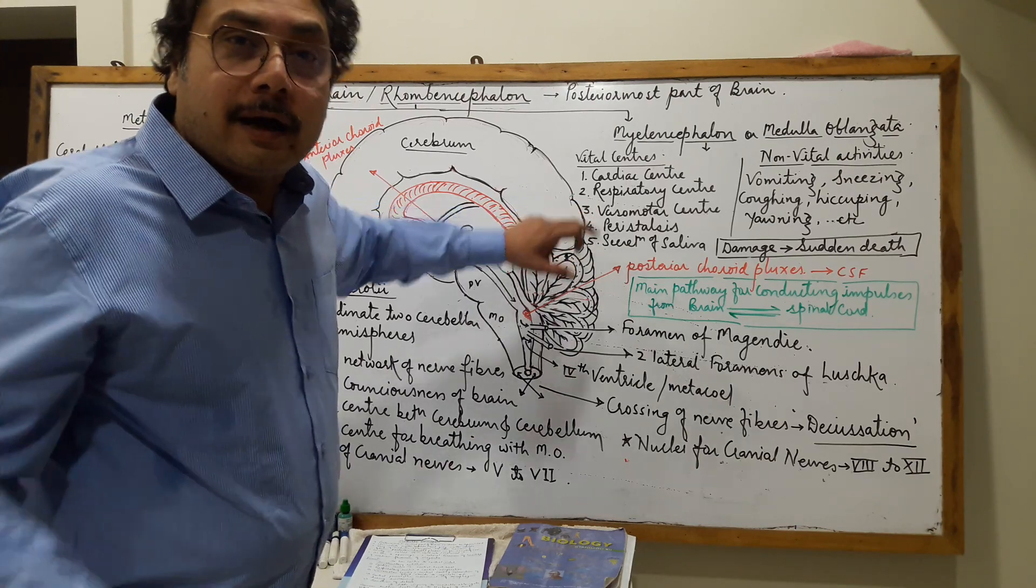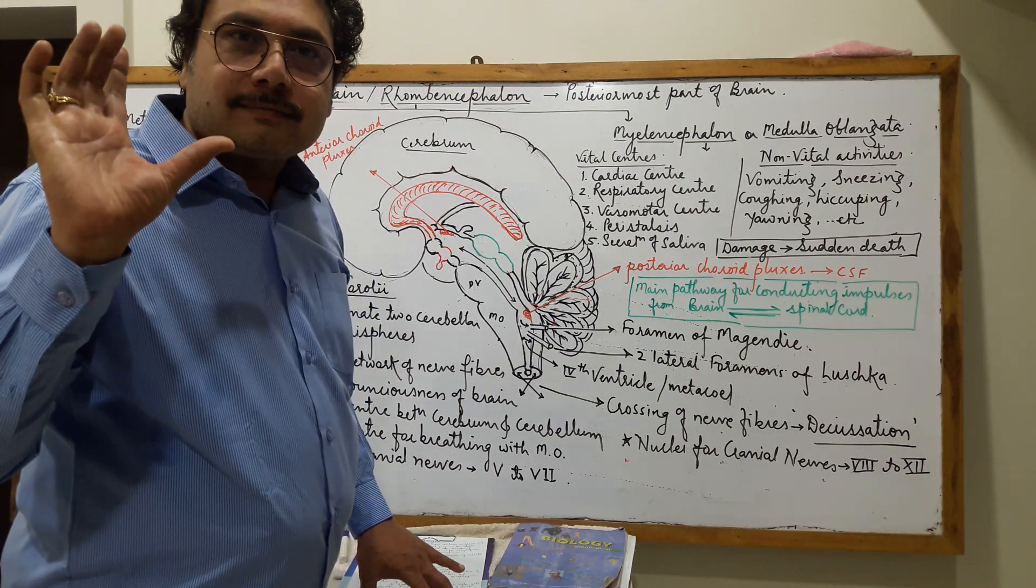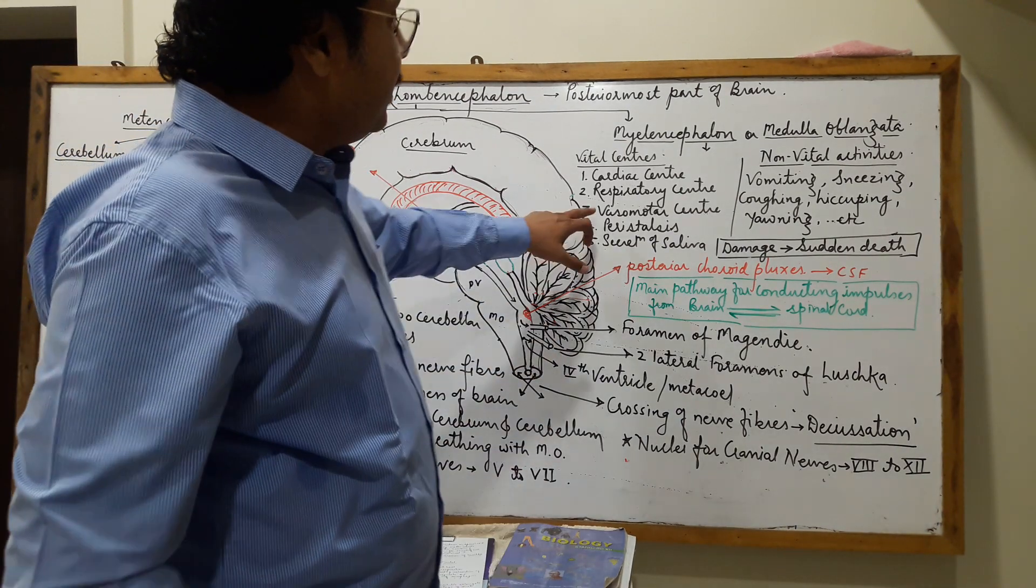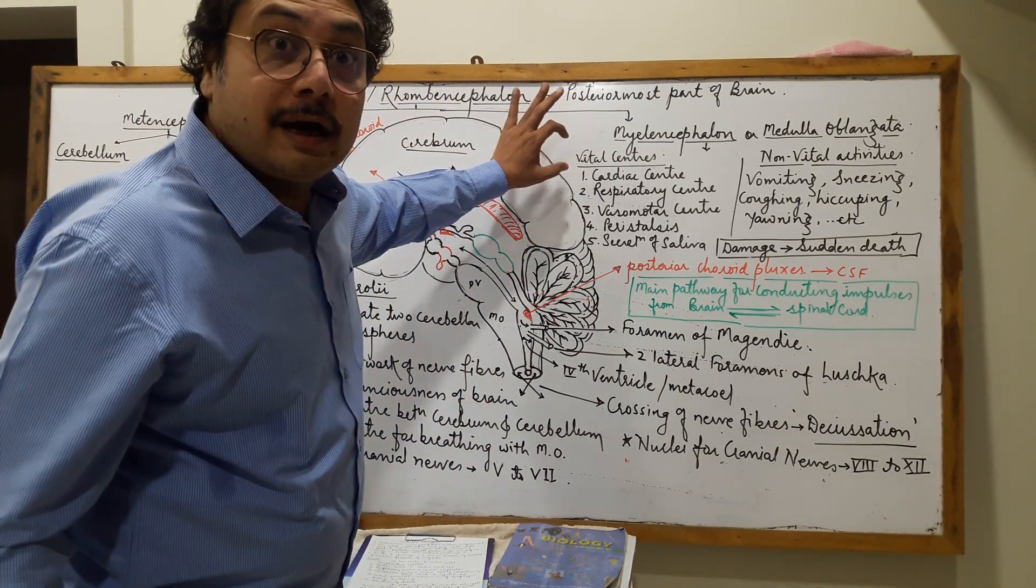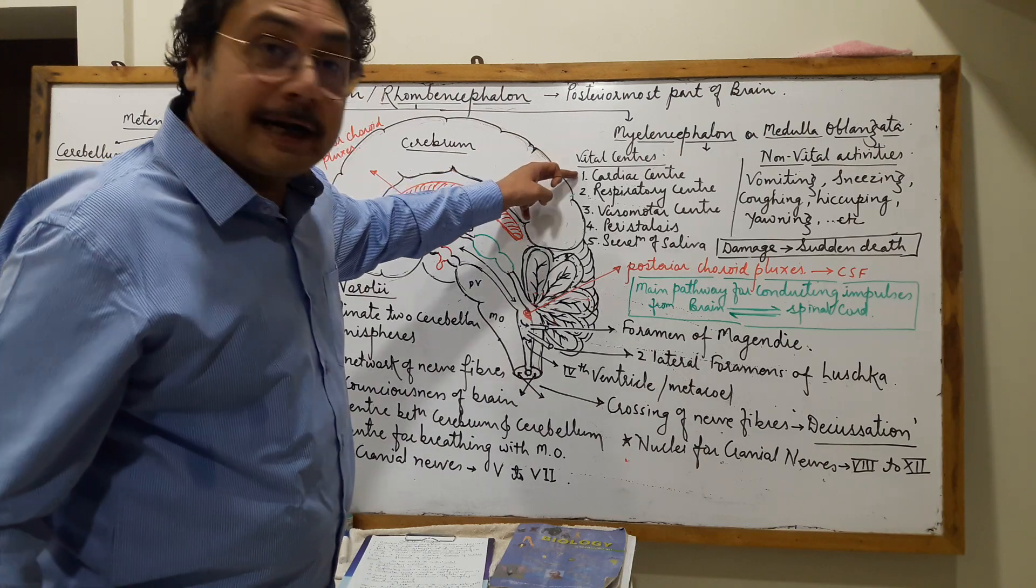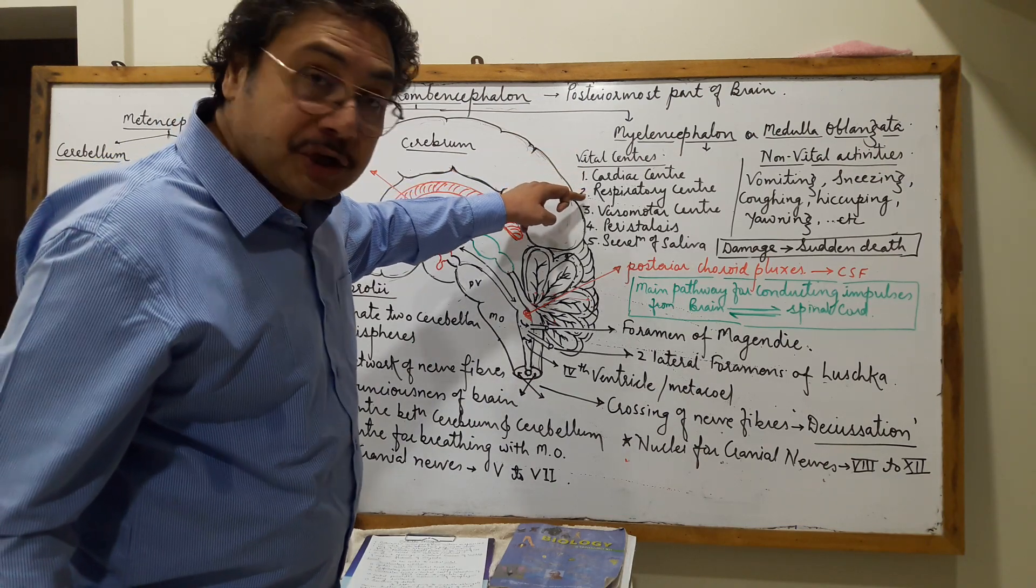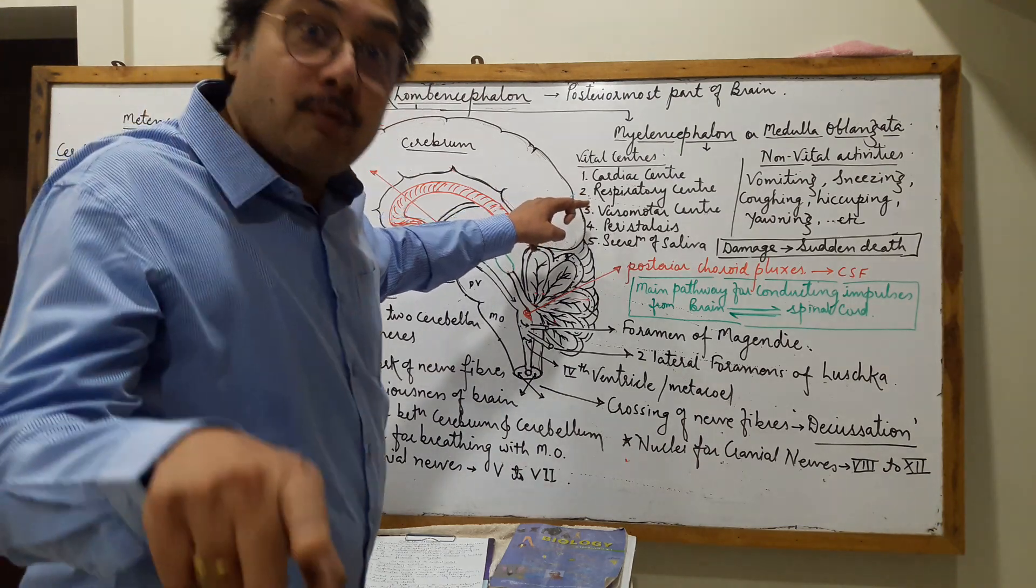Third is the vasomotor center—contraction and relaxation of the blood vessels to regulate blood pressure. So such vital centers—cardiac center, respiratory center, vasomotor center—will regulate heart activity, respiration rate, and blood vessel contraction and relaxation, thereby regulating blood pressure.